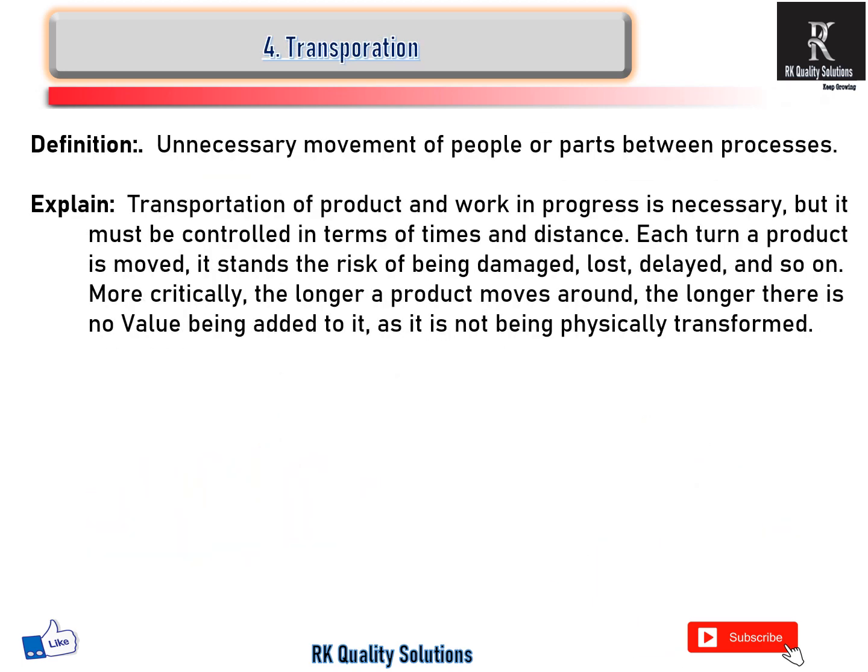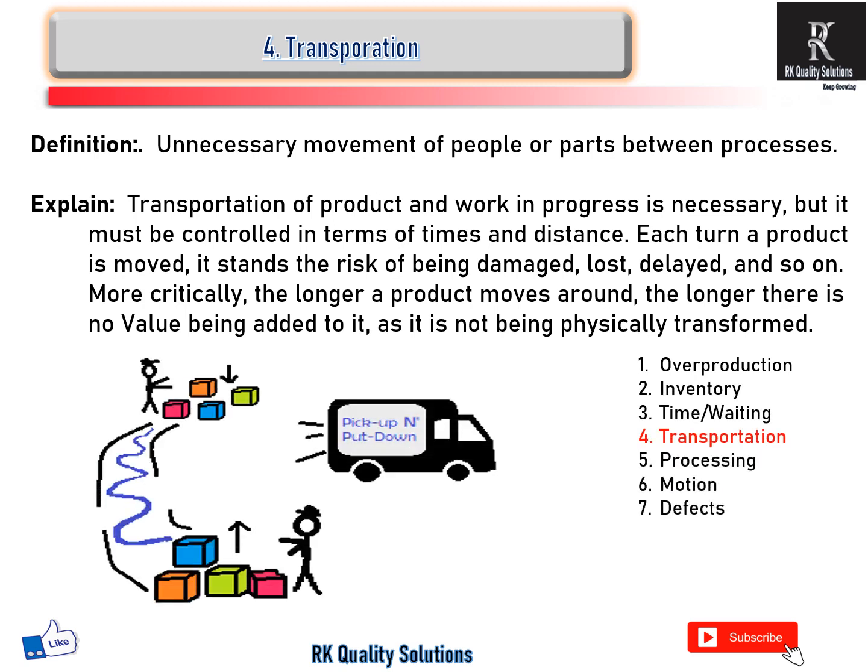Fourth waste is transportation. Unnecessary movement of people and parts between processes is known as transportation waste. Product and work-in-process movement is necessary but must be controlled in terms of time and distance. A vehicle picks up material in one area but goes to another area unnecessarily. This creates unwanted movement of manpower and resources — totally transportation wastage.